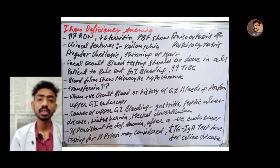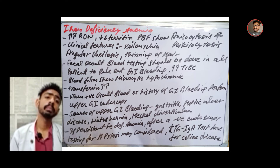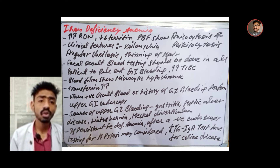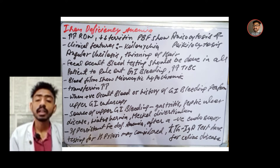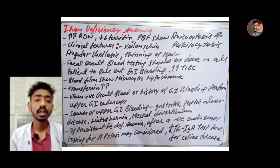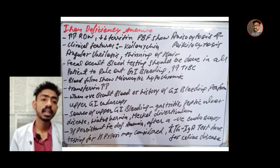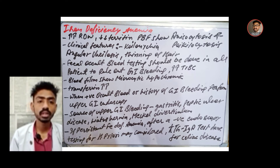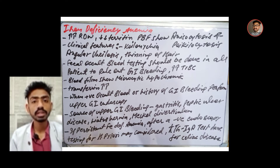Sources of upper GI bleeding include gastritis, peptic ulcer disease, hiatus hernia, and Meckel's diverticulum. Fecal occult blood testing should be done in all patients with suspected GI bleeding. If iron deficiency persists after a negative endoscopy, testing for Helicobacter pylori may be considered, and anti-tTG IgA levels can be done in suspected celiac disease patients as tTG IgA increases in celiac disease.